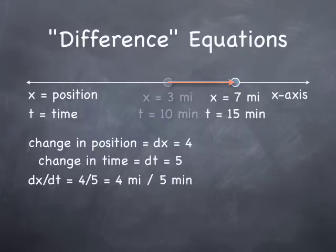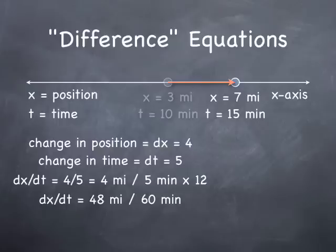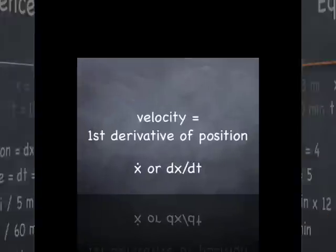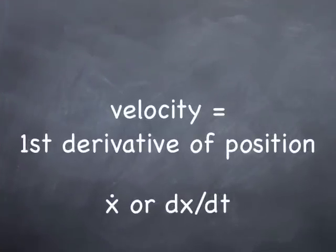It's an unusual speed, though, so it makes sense to multiply it by 12, which gives us 48 miles per 60 minutes, or 48 miles per hour. This is the velocity of the car. Velocity is the first derivative of position. It is written as x dot or dx/dt.